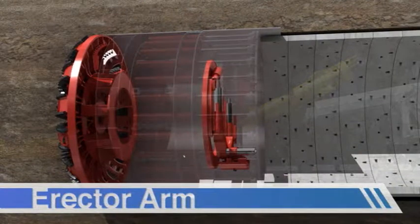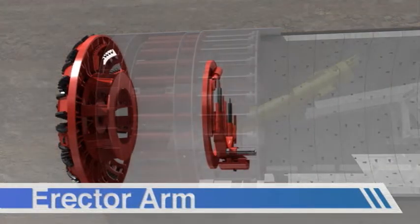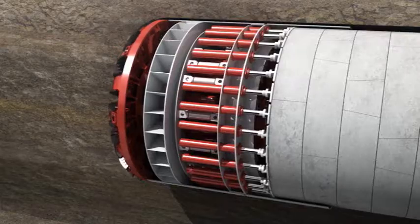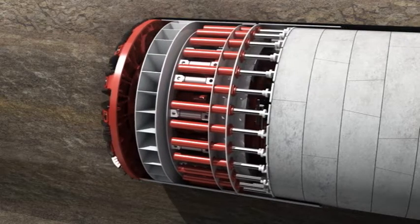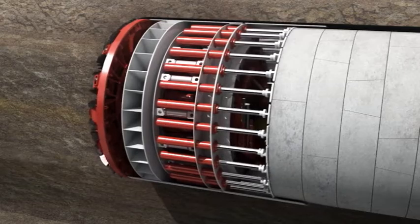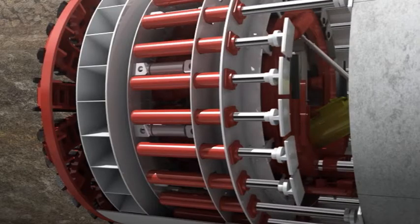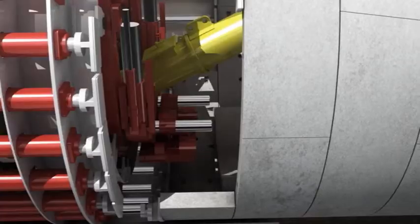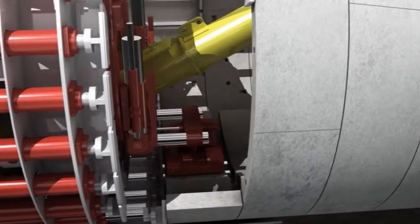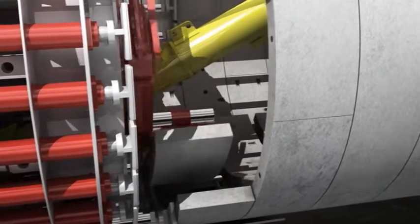The installation of the tunnel lining is produced by the erector arm, which is located in the rear body of the shield. Once the TBM has completed the excavation of one full stroke, the thrust cylinders retract in groups and the erector commences the installation of each concrete piece, which are known as segments.